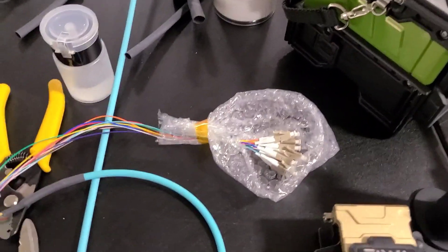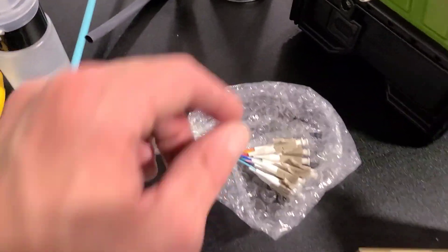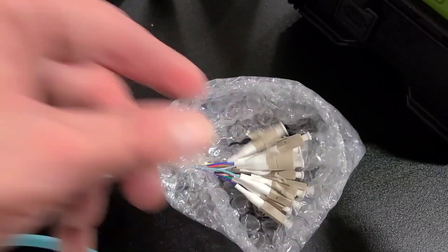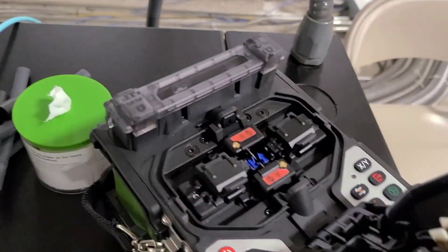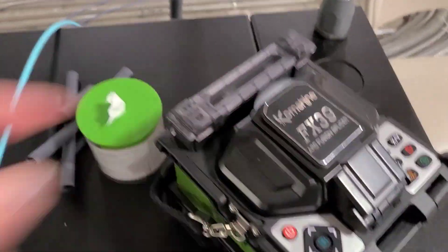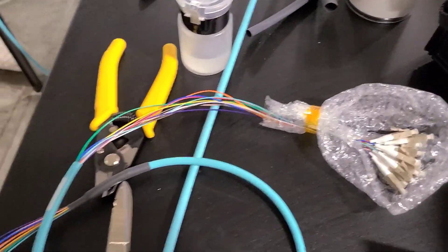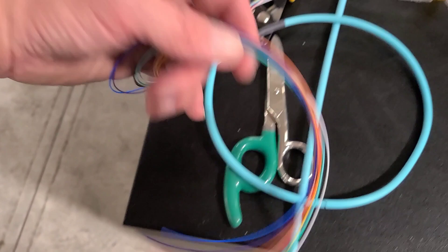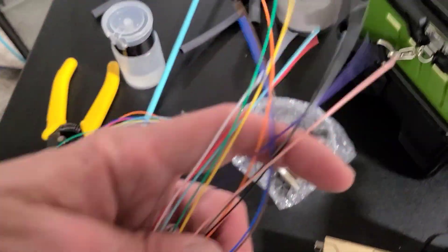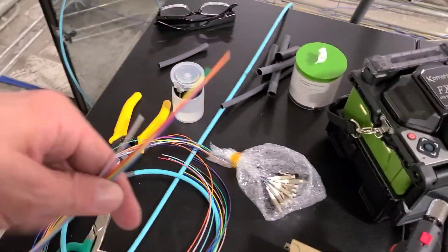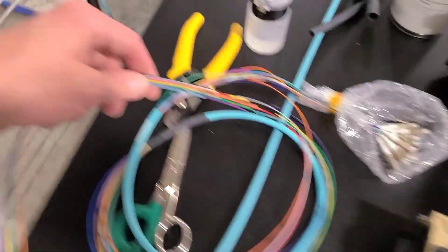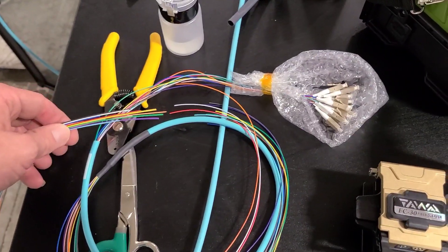This is for if you're installing a pigtail. I've got LC connectors here, so rather than having a specific splicer that splices the LC connectors, what we have is the LC connectors and a pigtail. We're going to connect this pigtail right here to our fiber coming in, so these two will splice together and I'll show you that process now.